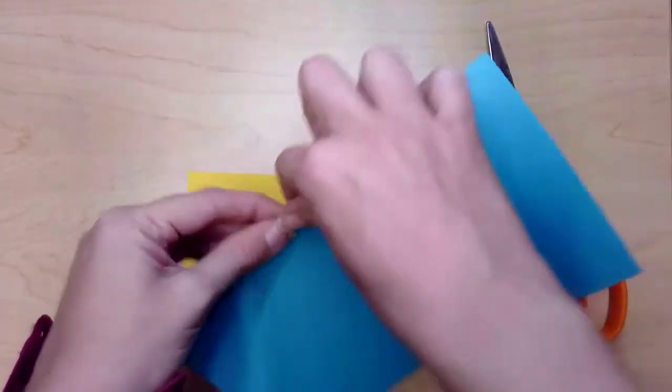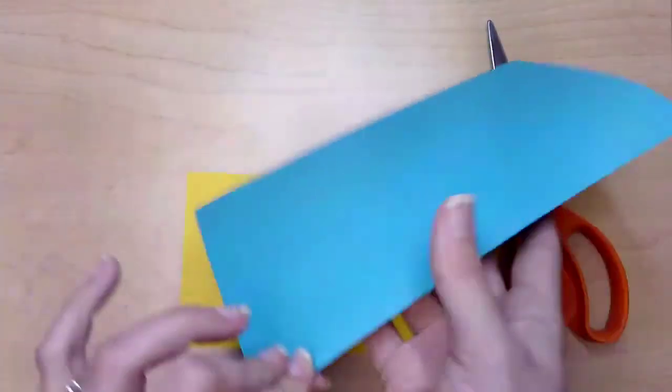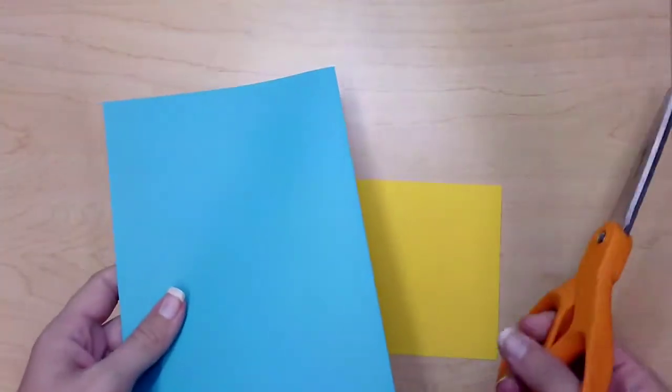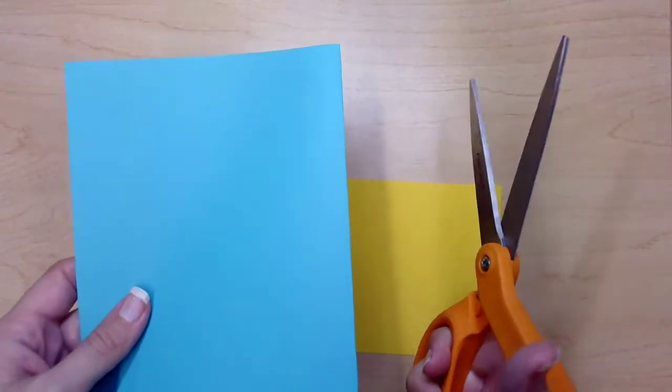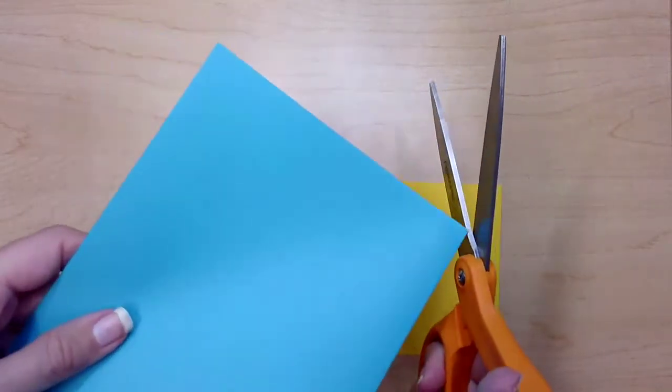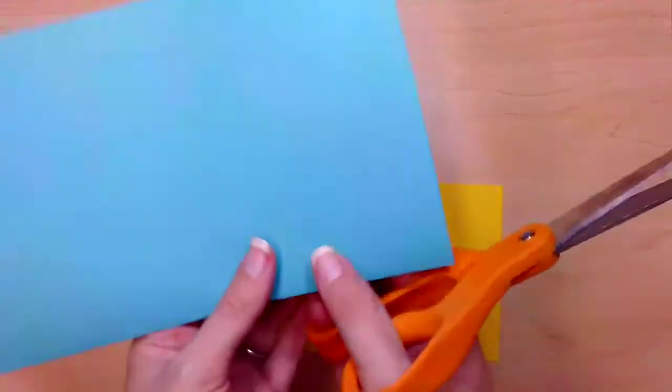Fold it down the middle and now cut out an organic shape. But when you do that, I want you to pay attention to where the paper meets the apex of the scissors.